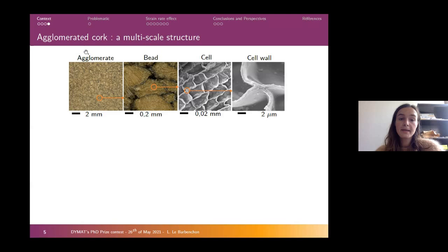The material that we studied was observed at several scales. Here we have the scale of the agglomerates, the scale of the bead, and if we go closer we can observe the cell structure of the cork. A little bit closer, we can see that the cell walls of the cork can also be considered as composite materials.